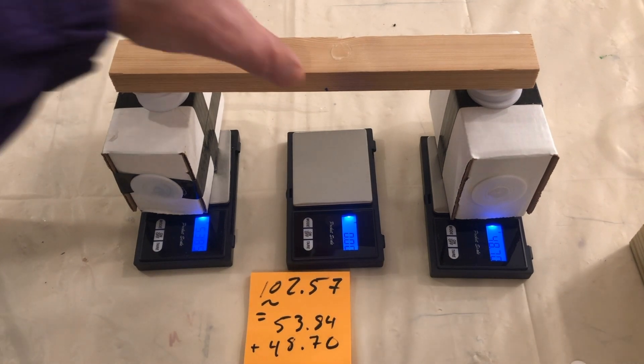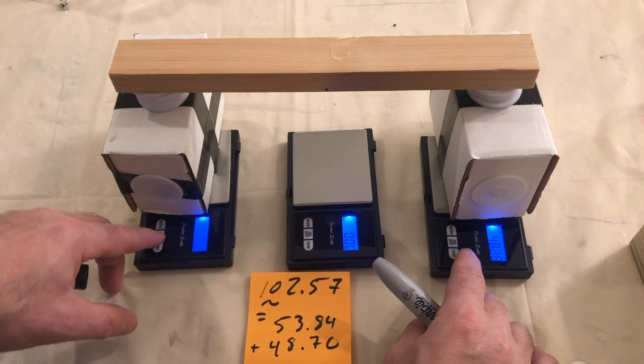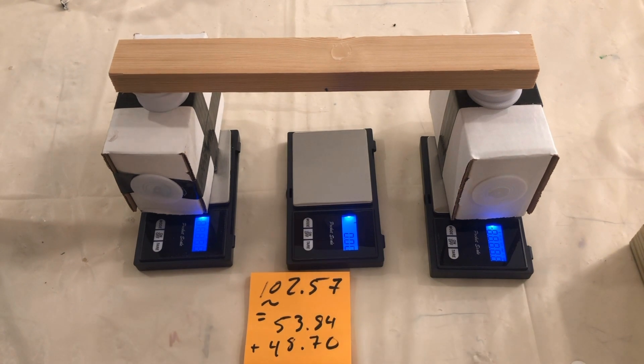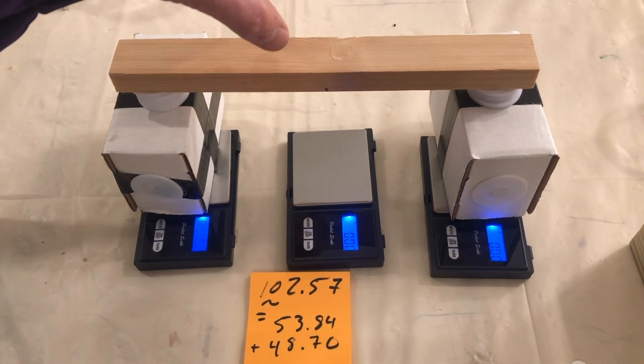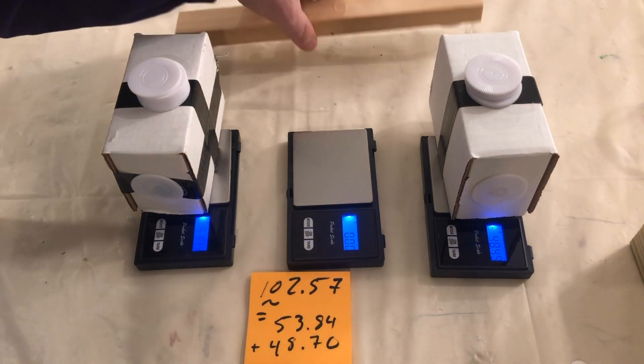We'll now zero out the force of gravity on both of these scales that is from this beam. To do that, you may need to turn the scale on and off rather than just tare it. Now we'll remove this beam and place it at the side.